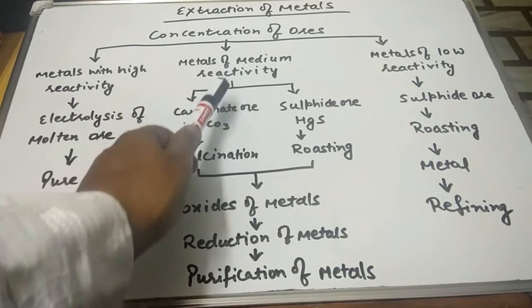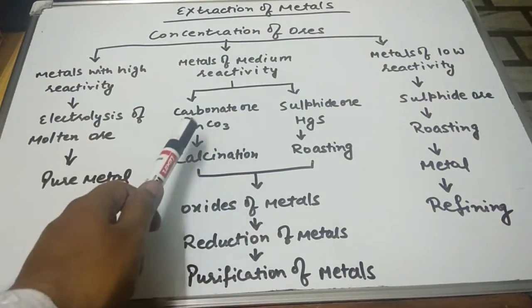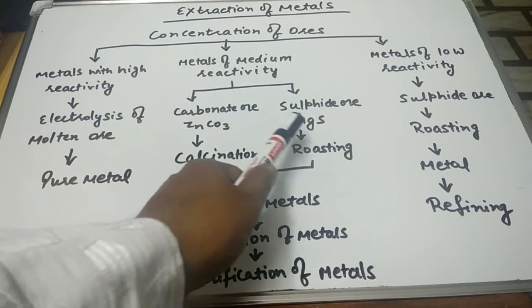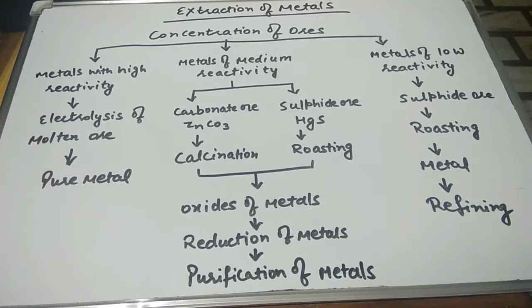At the second stage, metals of medium reactivity. There are two types of metals in the medium activity: carbonate ore or sulphide ore. What is the meaning of carbonate and sulphide ore? Basically, the medium reactivity metals are generally not in a free state under the earth's surface, so they are in the carbonate ore and the sulphide ore.